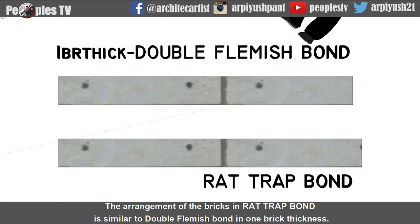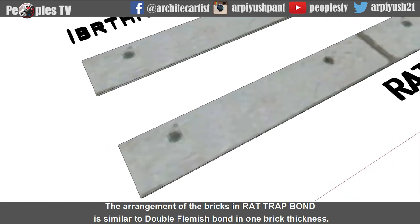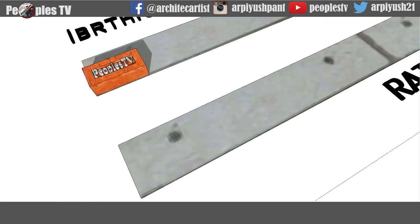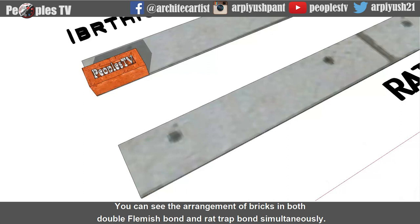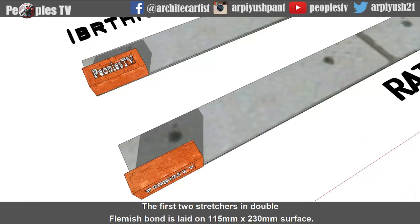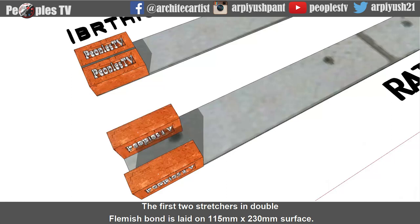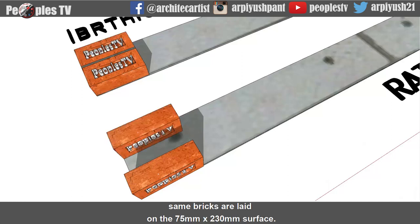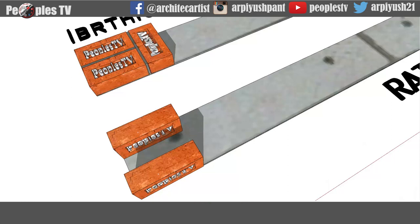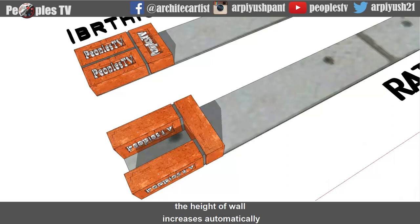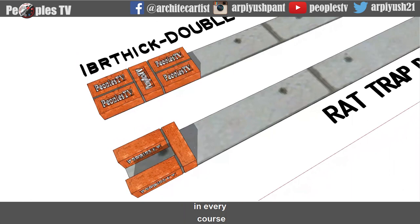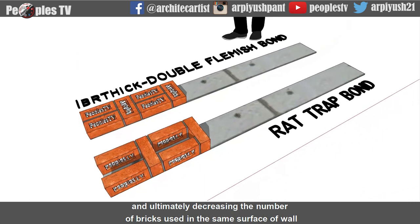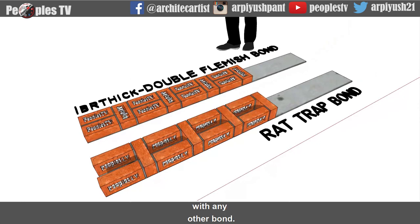The arrangement of bricks in rat trap bond is similar to double Flemish bond in one brick thickness. You can see the arrangement of bricks in both double Flemish bond and rat trap bond simultaneously. The first two stretchers in double Flemish bond are laid on the 115 by 230 mm surface, while in rat trap bond the same bricks are laid on the 75 by 230 mm surface. Because of this, the height of the wall increases automatically in every course, ultimately decreasing the number of bricks used compared to any other bond.